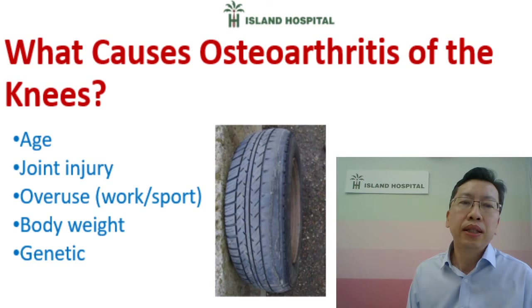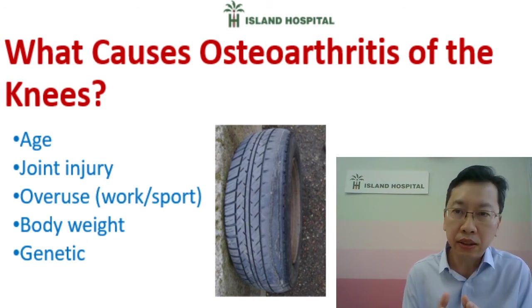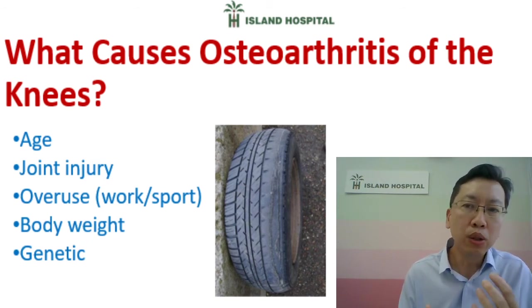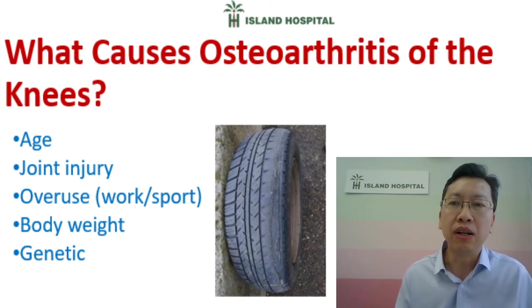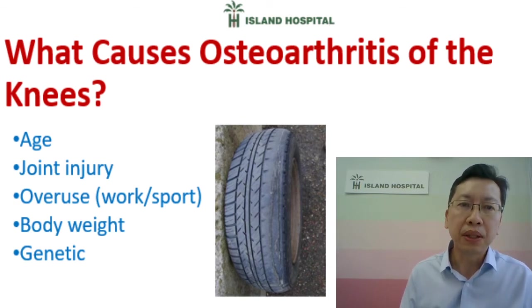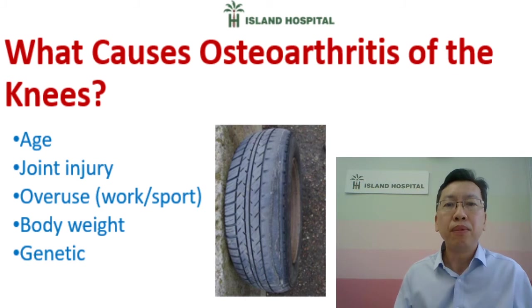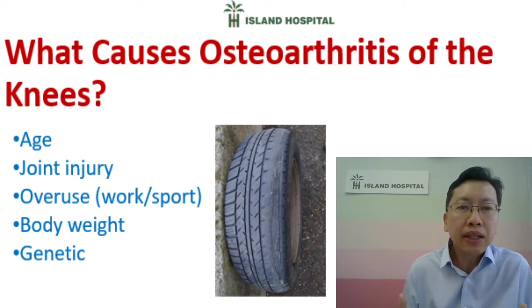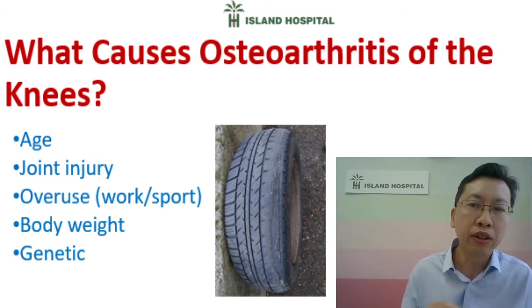Body weight is definitely a factor. The heavier the body, the higher the load on the knee joint, which causes the cartilage to wear off faster or earlier. Osteoarthritis has also been found to have some genetic component. If your parents had osteoarthritis at an early age, the children may also develop some degree of arthritis earlier than the normal population.